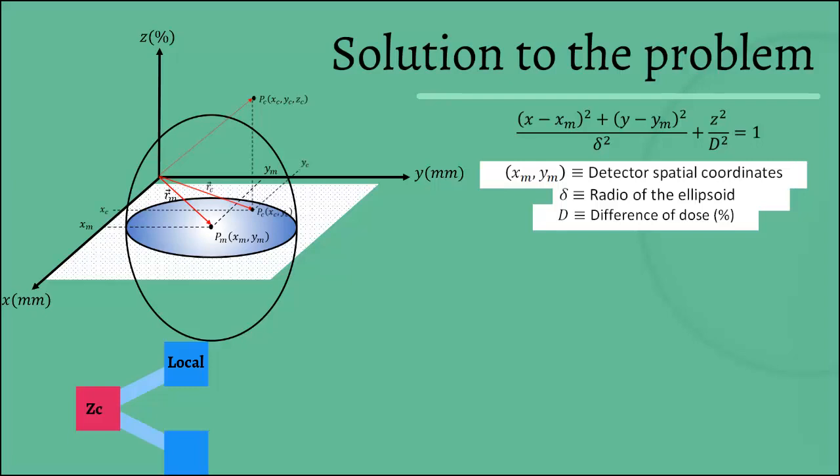What we're saying is that we're normalizing in a local manner. But we can make a normalization to any other point. For example, we could normalize the maximum value of dose registered in our detector array.